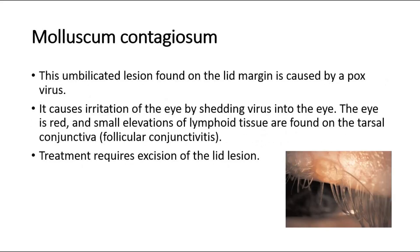The second condition is molluscum contagiosum. This umbilicated lesion found on the lid margin is caused by poxvirus. It causes irritation of the eye by shedding virus into the eye. The eye is red, and small elevations of lymphoid tissue are found on the tarsal conjunctiva, causing follicular conjunctivitis. Treatment requires excision of the lid lesion.